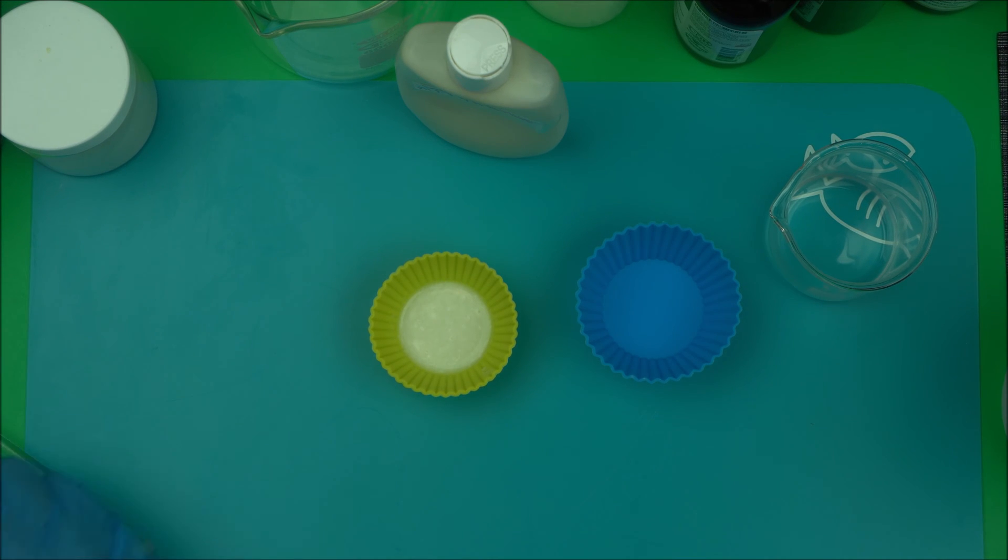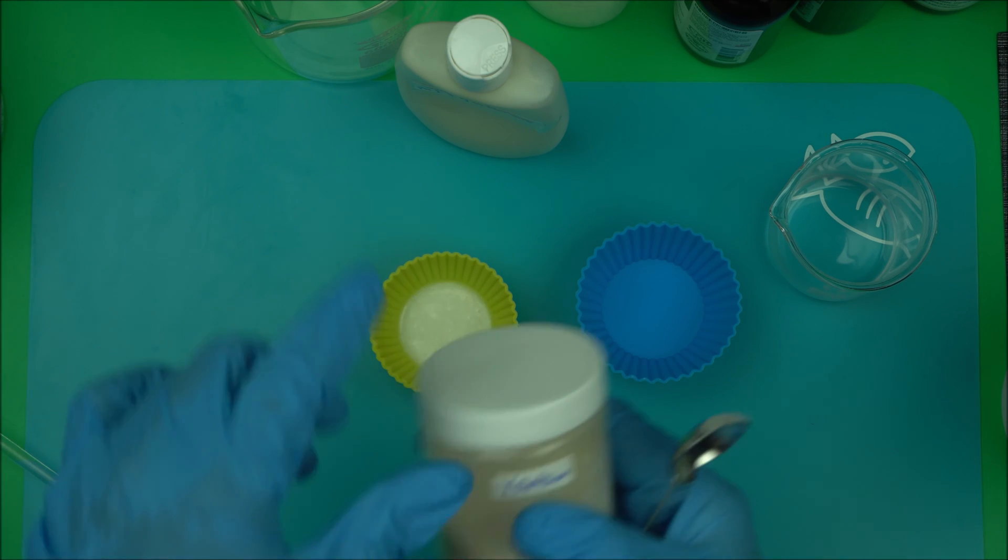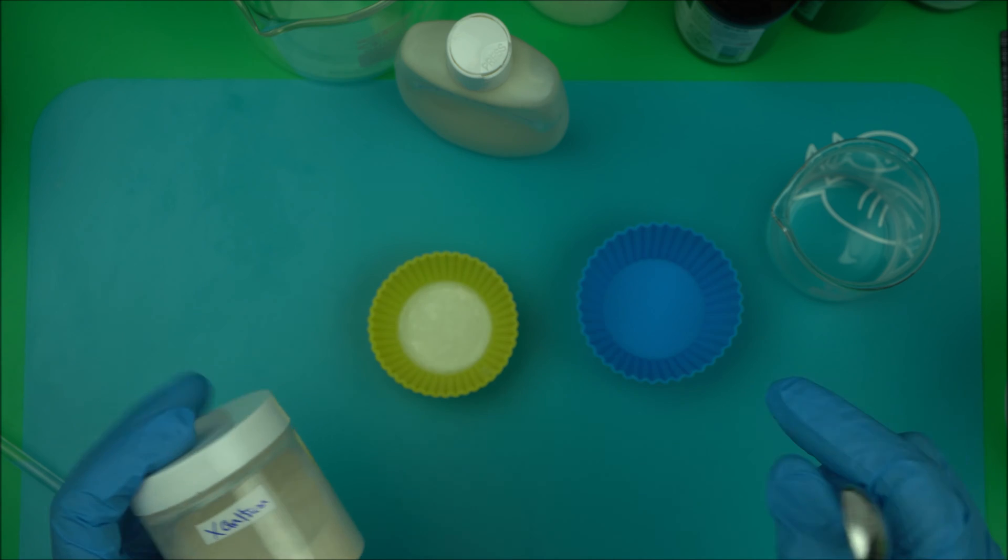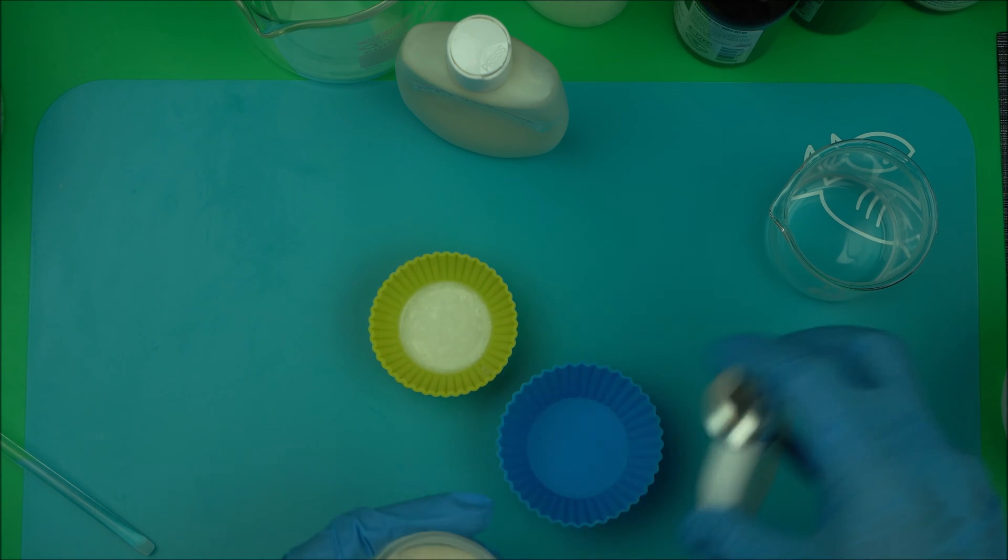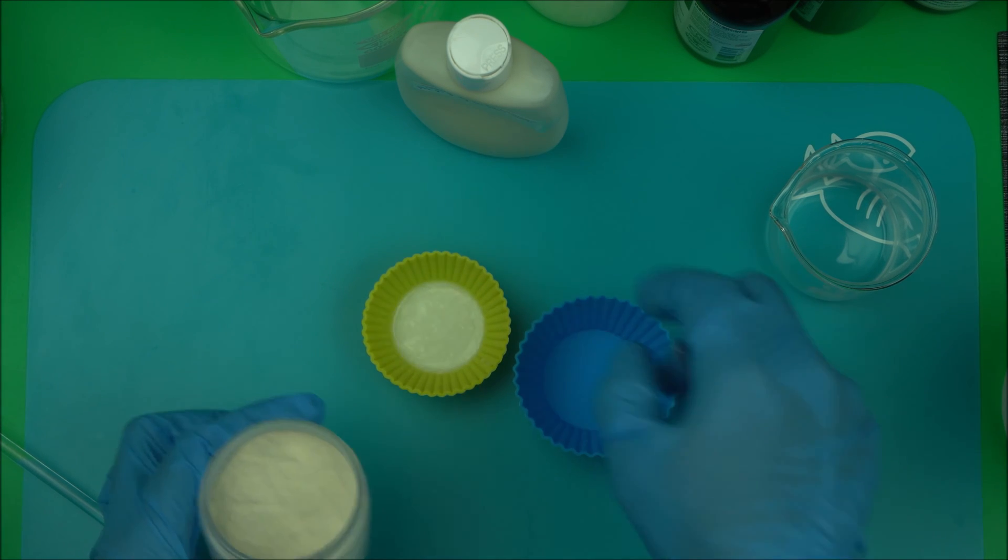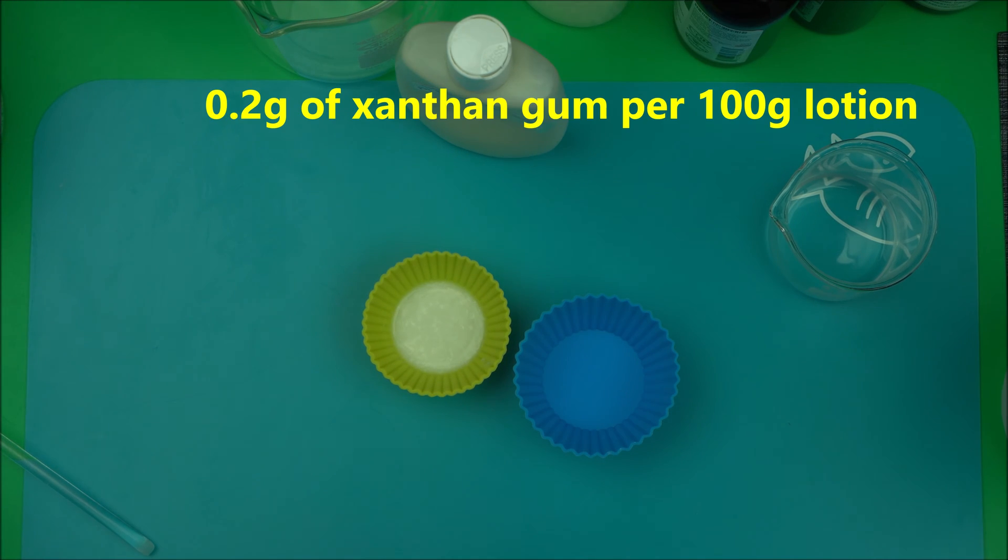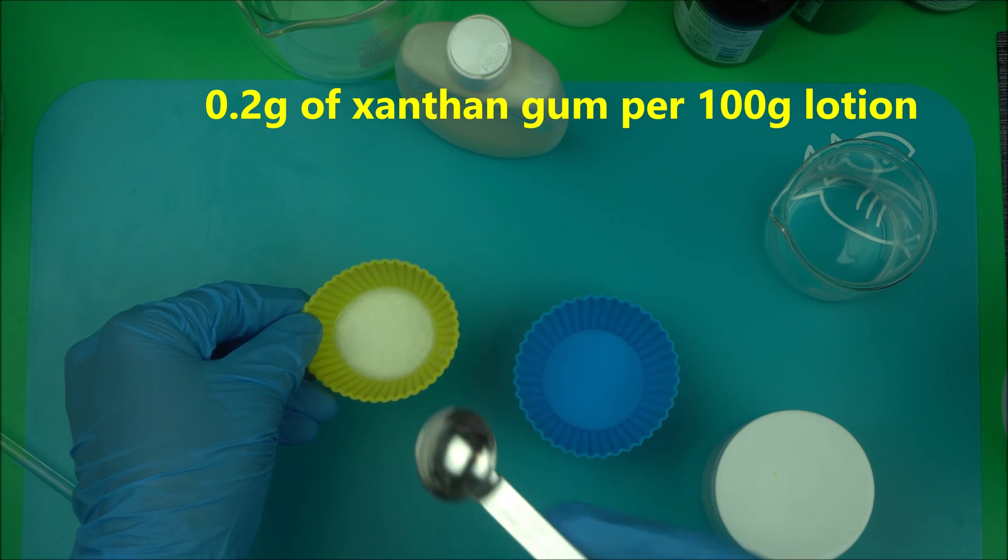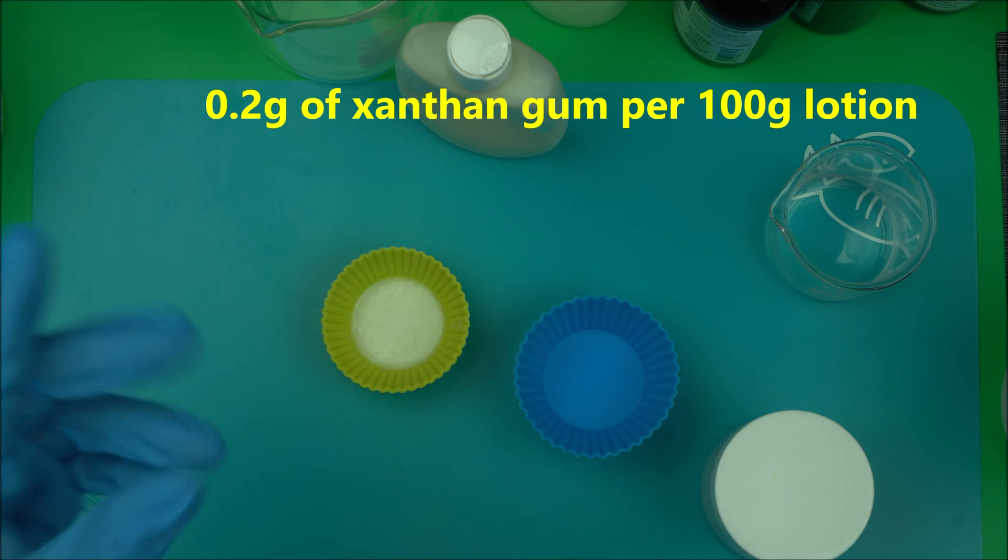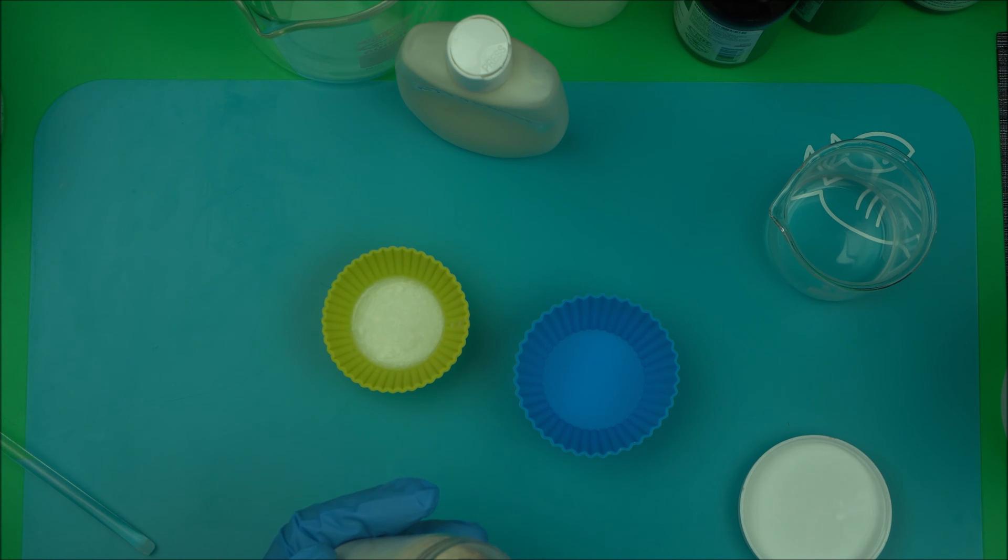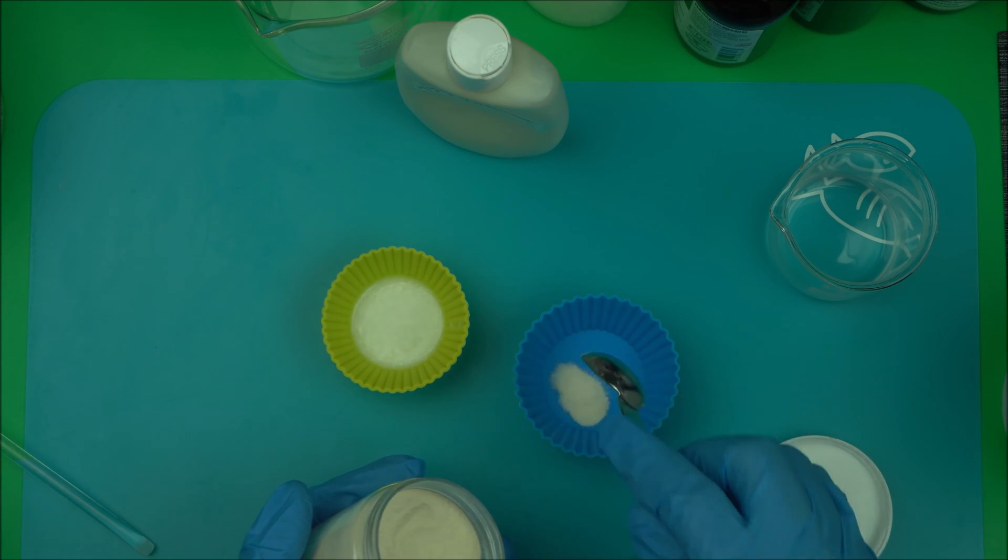Get yourself xanthan gum - very important. Take a little bit of xanthan gum depending on the size of your lotion. For example, if you're going to really make it stable, you need to weigh your lotion. Let's say your lotion is 100 grams - make sure you take 0.2 grams of xanthan gum.